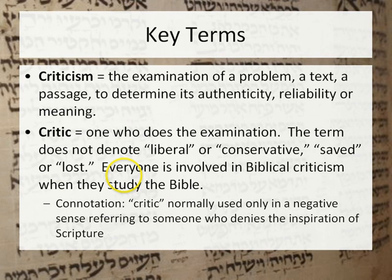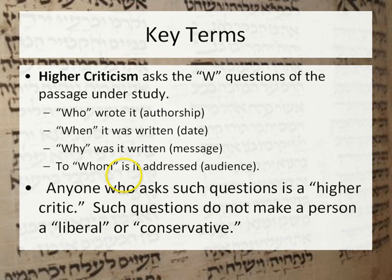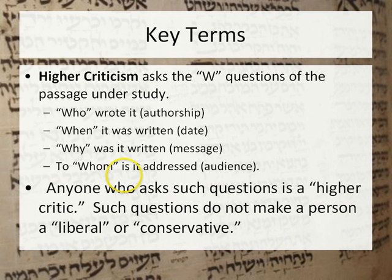Everyone is involved in biblical criticism when they study the Bible. Higher criticism asks the W questions of the passage under study: Who wrote it? Was it Daniel that wrote Daniel, Isaiah that wrote Isaiah? How do we know? When was it written? Why was it written? What's its message? To whom is it addressed? Anyone who asks such questions is a higher critic — it doesn't make one liberal or conservative. There's nothing in Genesis that says Moses wrote it, so to ask who wrote Genesis is a legitimate question.